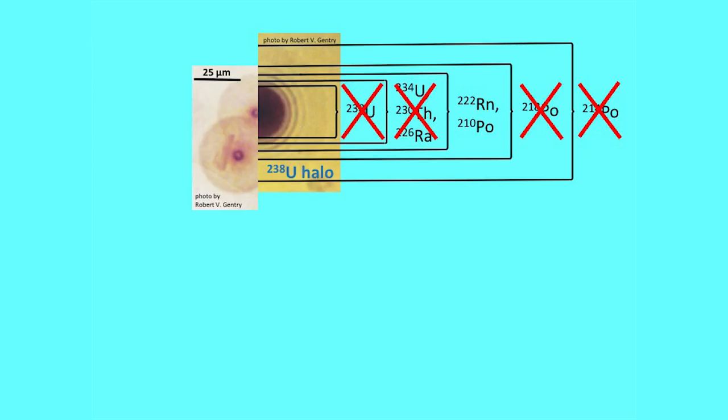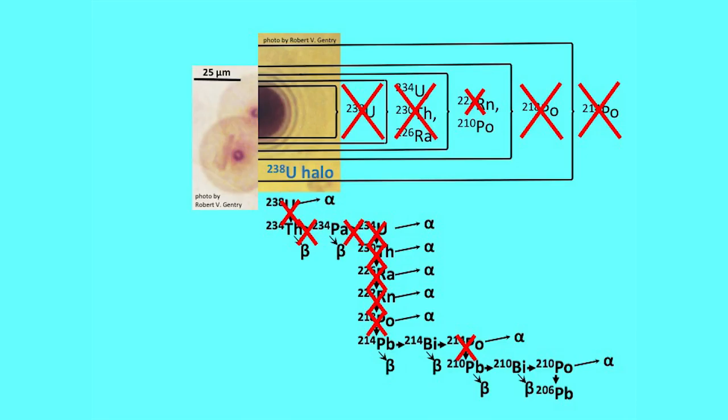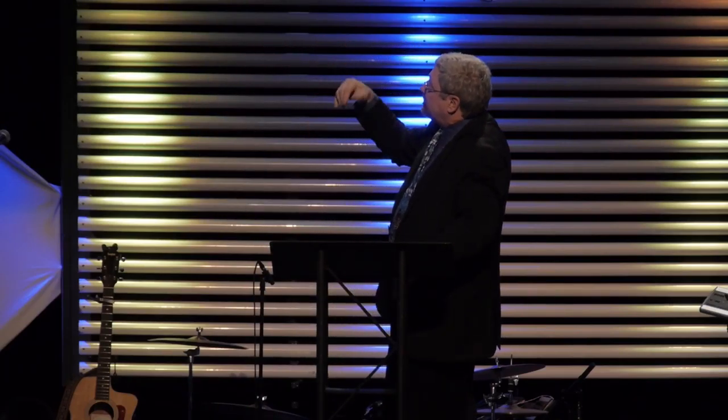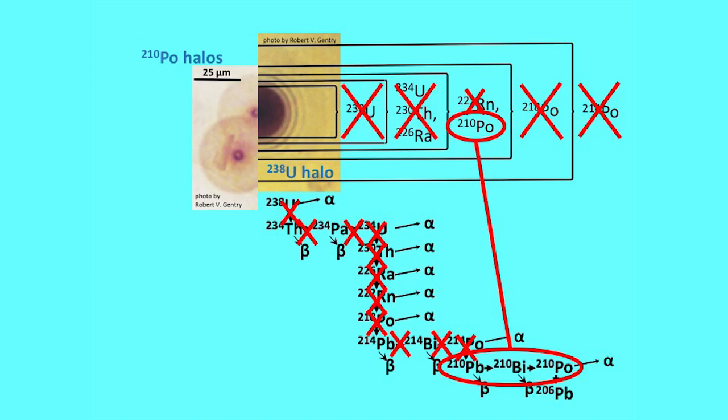You also can't be lead-214 or bismuth-214 because that would produce polonium-214, which isn't allowed. So those are counted out. Now we're left with only these possibilities: polonium-210. It can't be the radon because that would produce some others we don't see, so it must be polonium-210 that produces the halo. But it could be bismuth-210 or lead-210 that was laid down there and decayed into polonium-210. So we don't know whether it was initially lead-210, bismuth-210, or polonium-210.